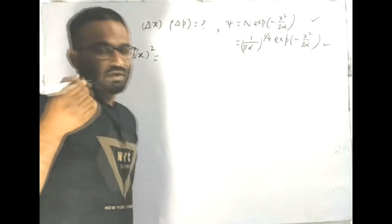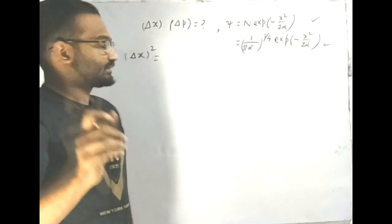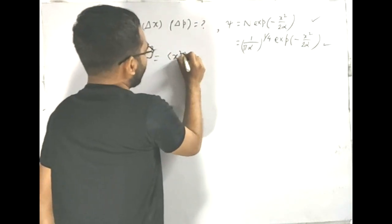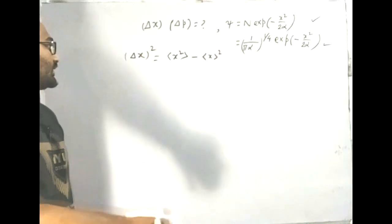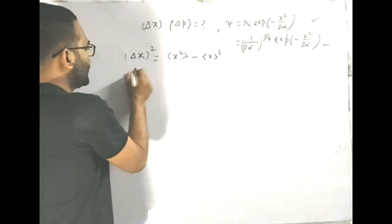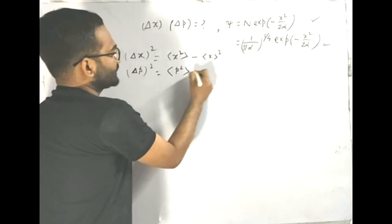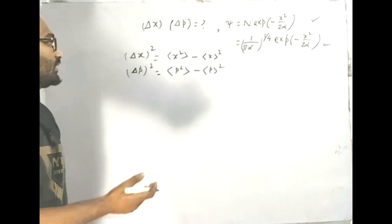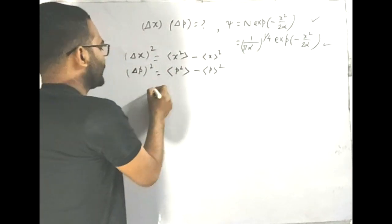To find delta x, we use the formula: delta x squared equals x squared average minus x average squared. Similarly, for delta p squared we write: delta p squared equals p squared average minus p average squared. So basically we need to find out four terms.